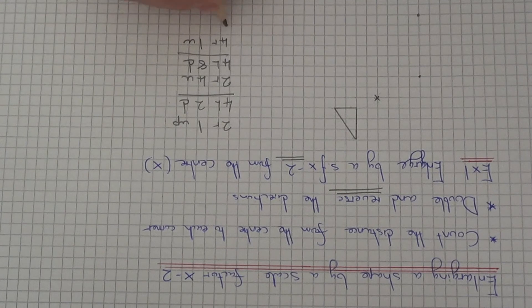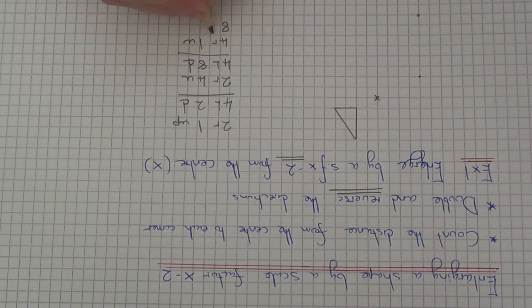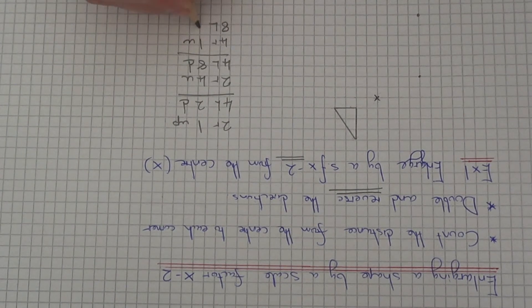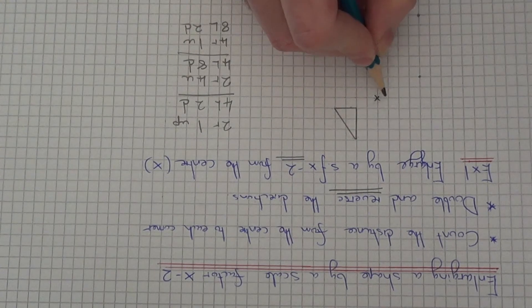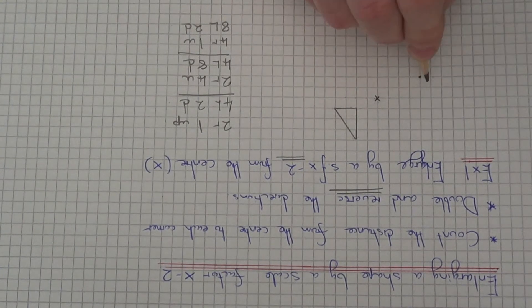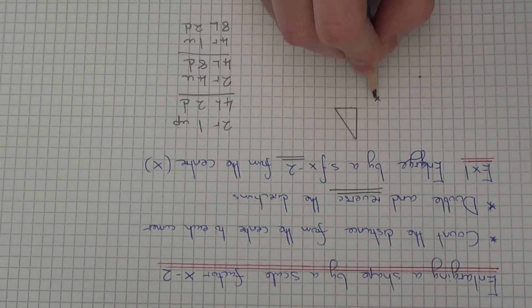So if we double these distances and reverse the directions, so it becomes 8 left and 2 down. So go back to your centre and count 8 squares left and 2 squares down.